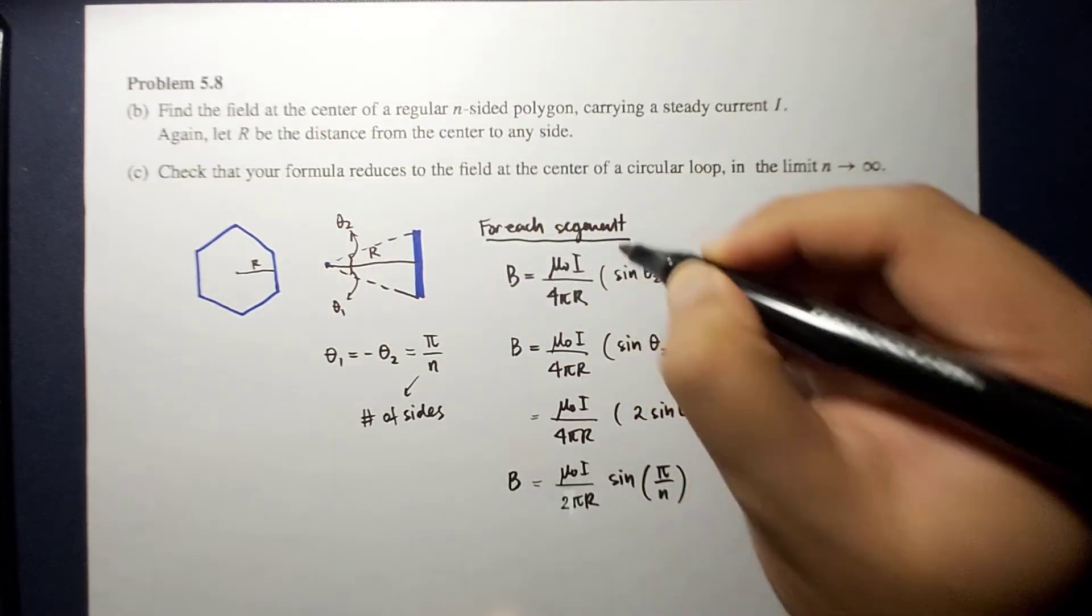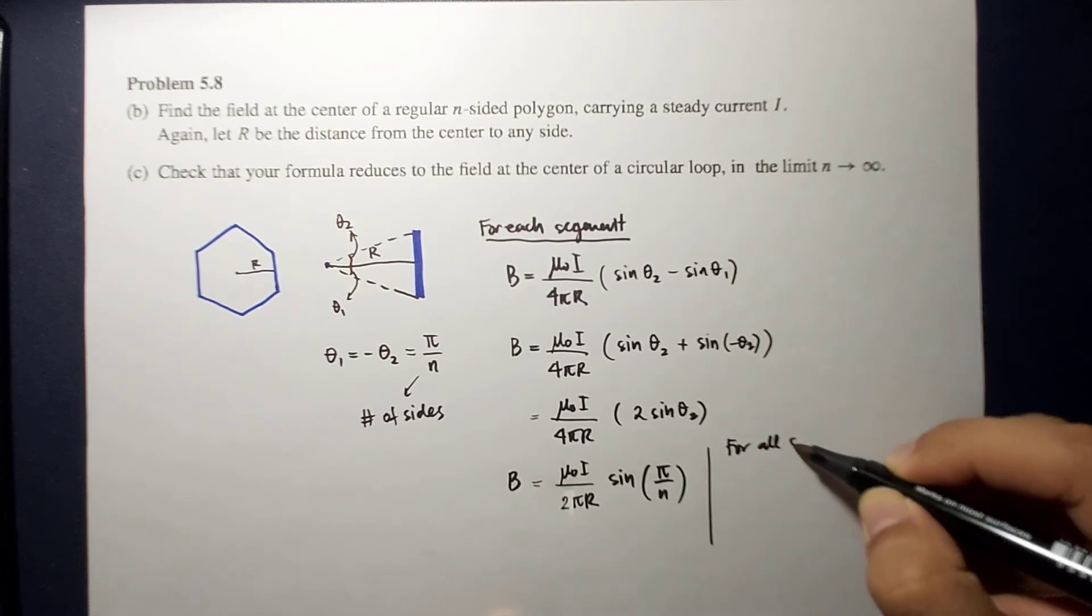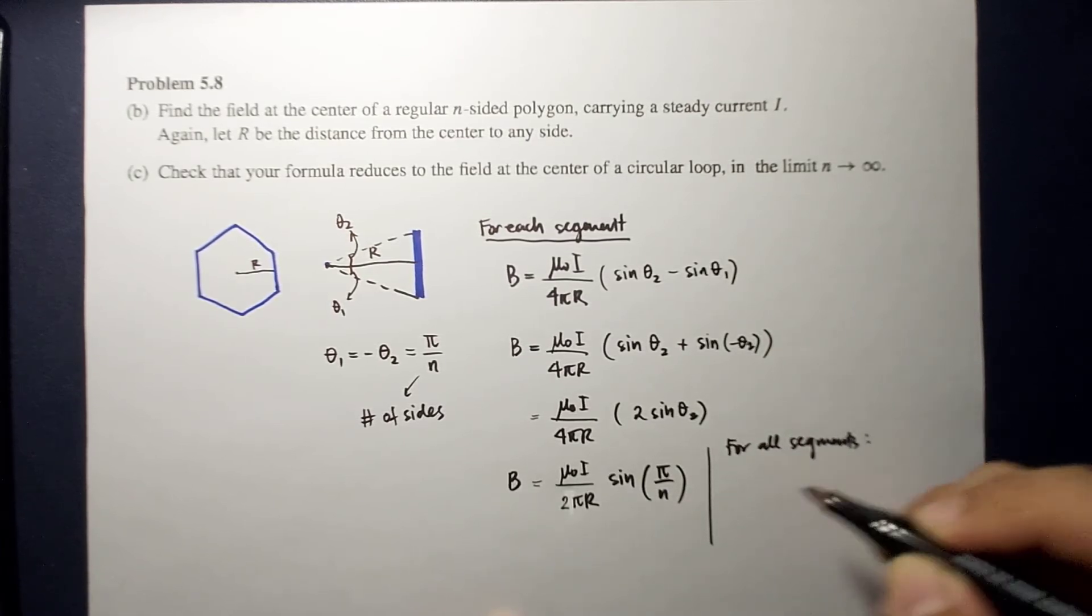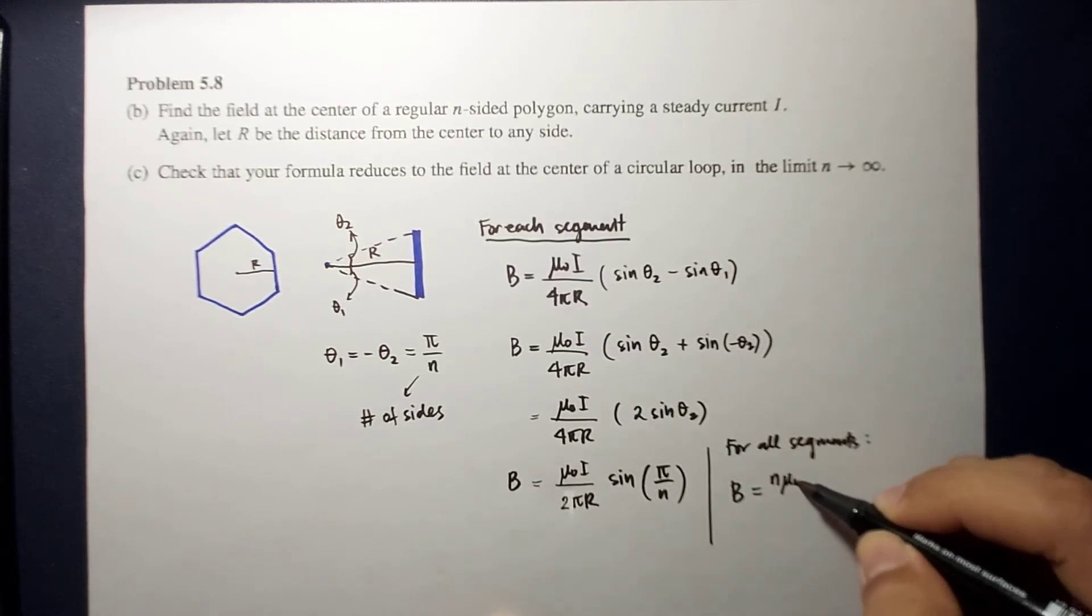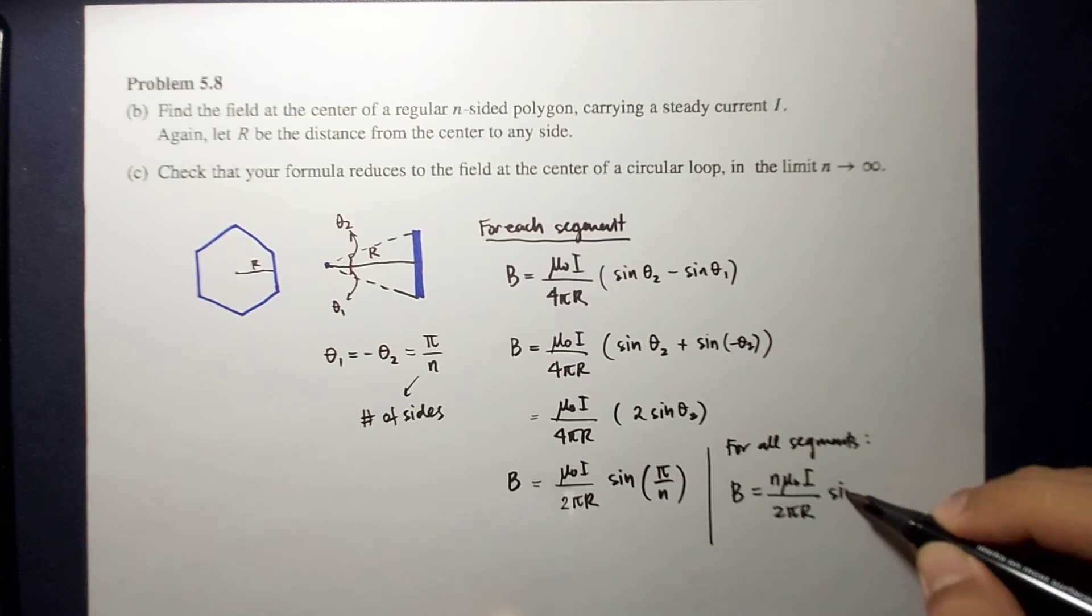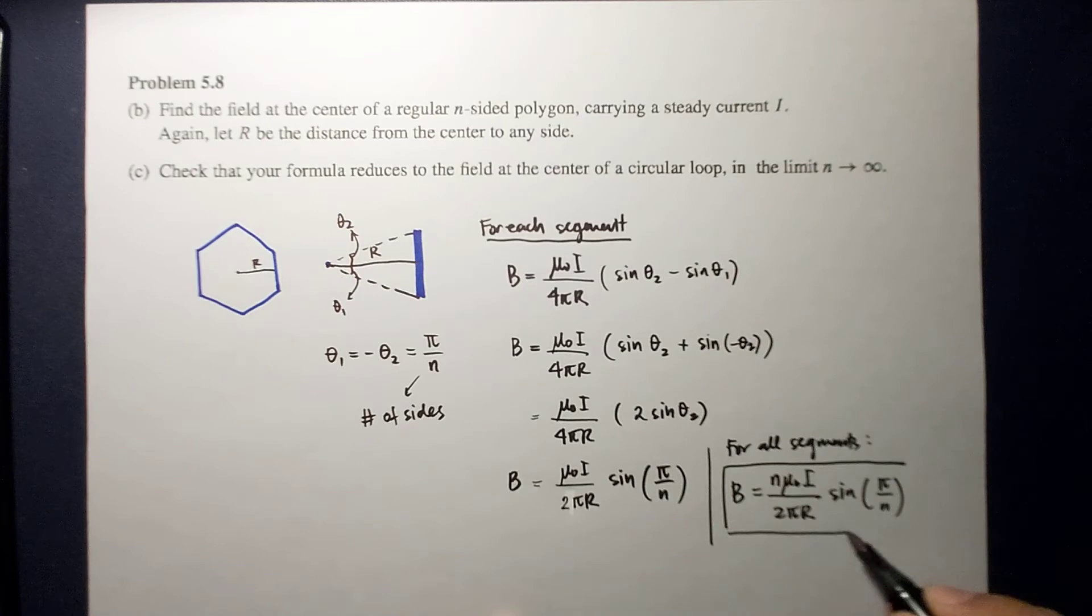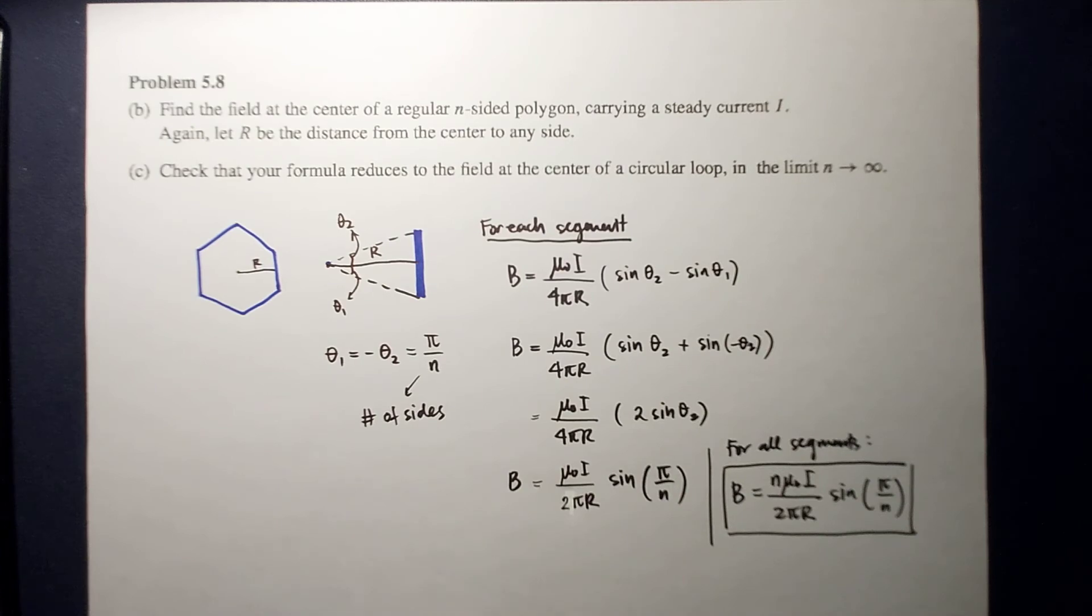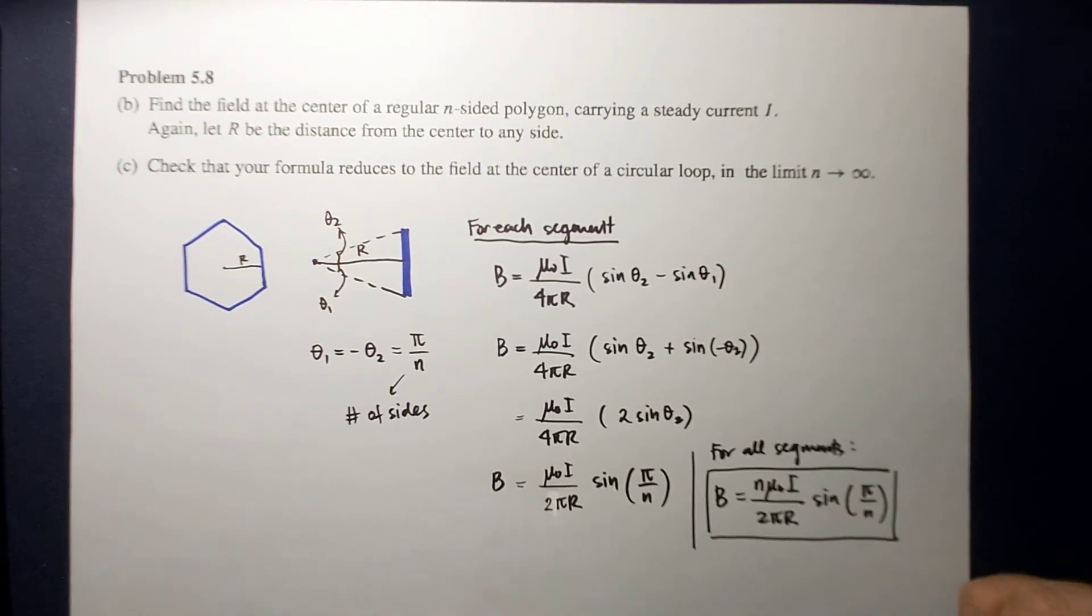So this is for each segment. For all segments we just multiply it by n. Therefore, the answer is n mu naught I over 2 pi r times sine pi over n. This is now the field at the center of any regular n-sided polygon carrying a steady state current of I, and r is the distance of each segment to the center of the side.